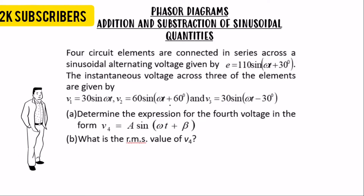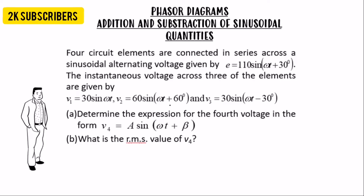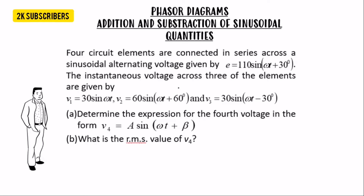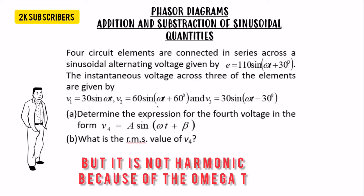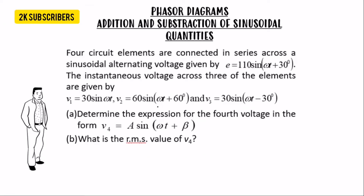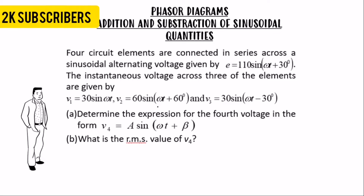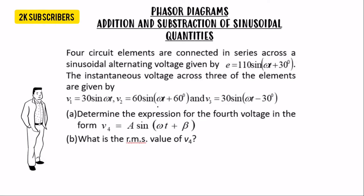The instantaneous voltages across three of the elements are given. We have a source providing the instantaneous voltage across these elements. This is essentially a harmonic question asking us to express Vin4 in the form of a sine(ωt + β). Please make sure you watch this video to the end.